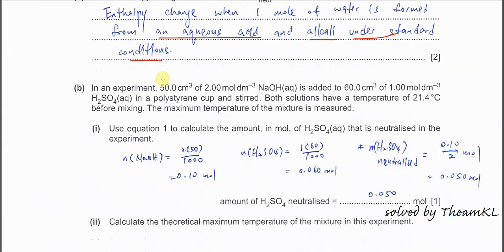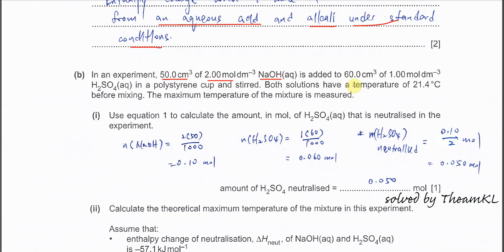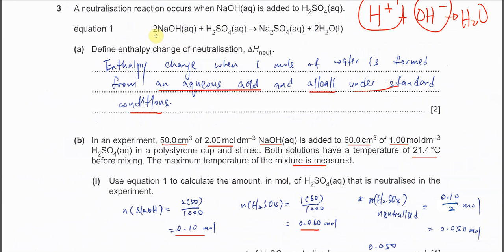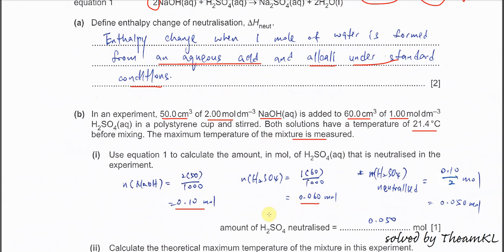Part B. Volume and concentration of NaOH given, same as the H2SO4 volume and concentration, and the initial temperature is 21.4, maximum temperature measured. Use equation 1 to calculate the amount of H2SO4 that neutralized in this experiment. It's better for you to calculate the mole of sodium hydroxide, which is 0.1 mole, and the mole of H2SO4. Use MV/1000 you'll get 0.06. From here, because we know that two moles of NaOH will react with one mole of H2SO4.